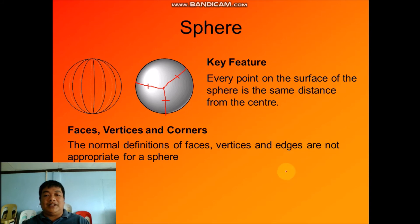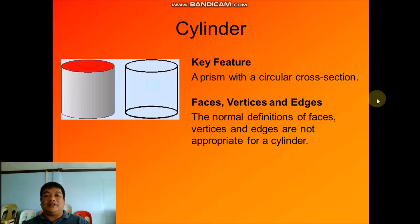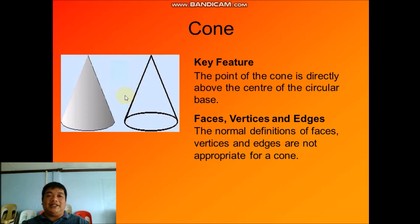The normal definitions of faces, vertices, and edges are not appropriate for a sphere, so there are no faces, vertices, or edges found in a sphere. Next is the cylinder. The key feature of a cylinder is that it is a prism with a circular cross section. Similarly, the normal definitions of faces, vertices, and edges are not appropriate for a cylinder.